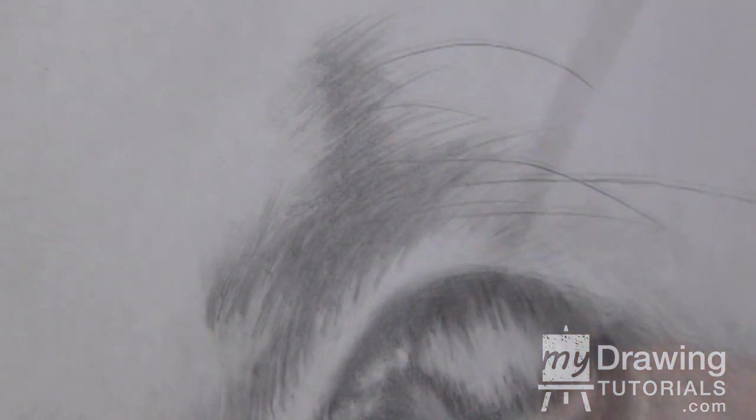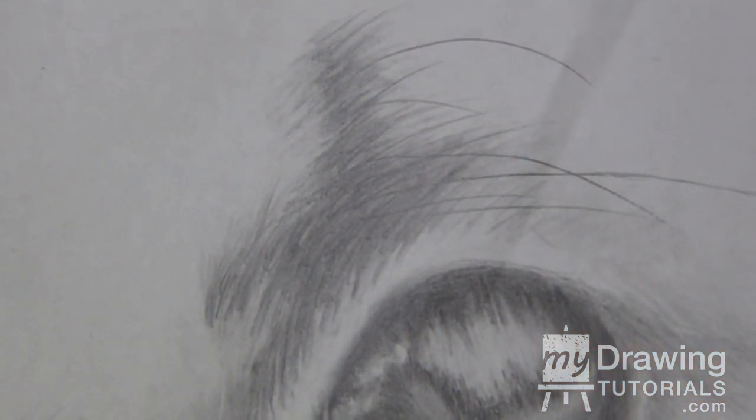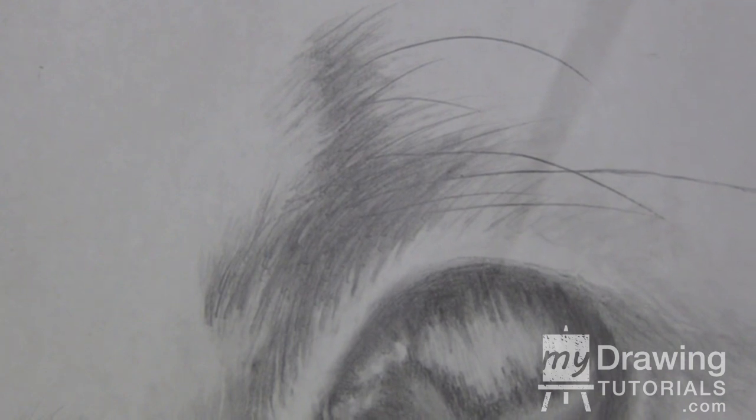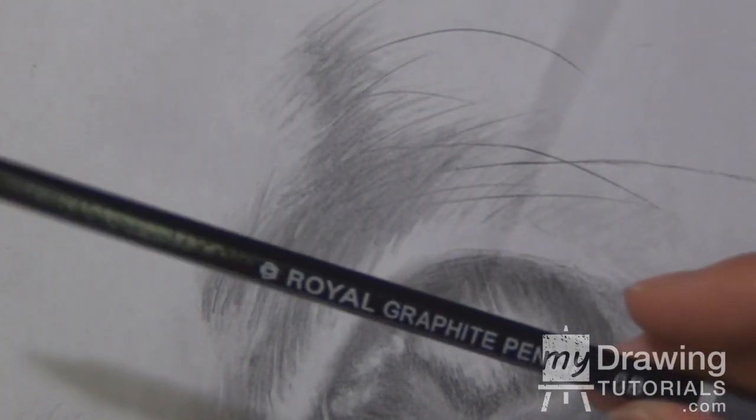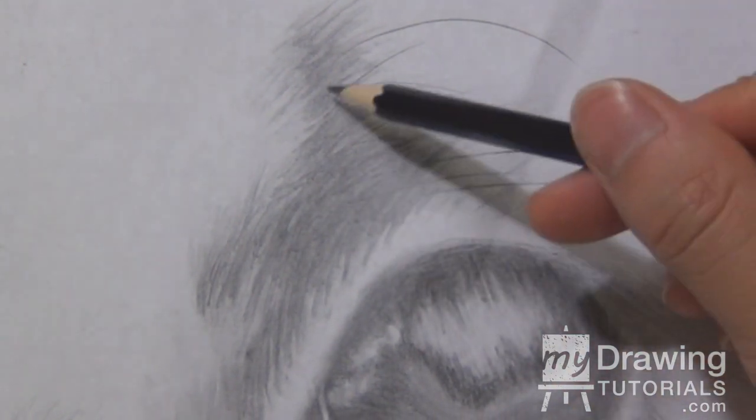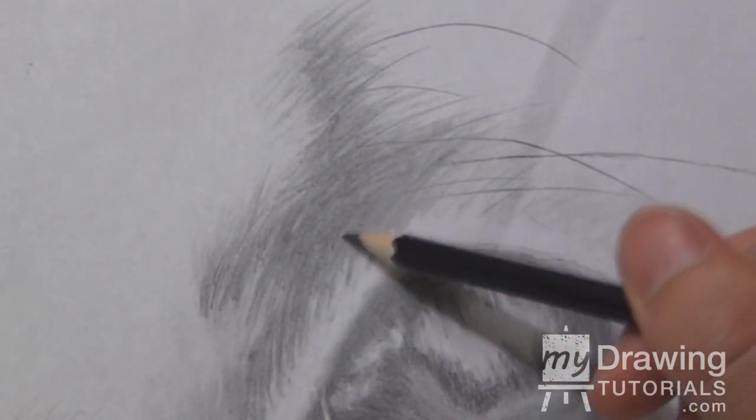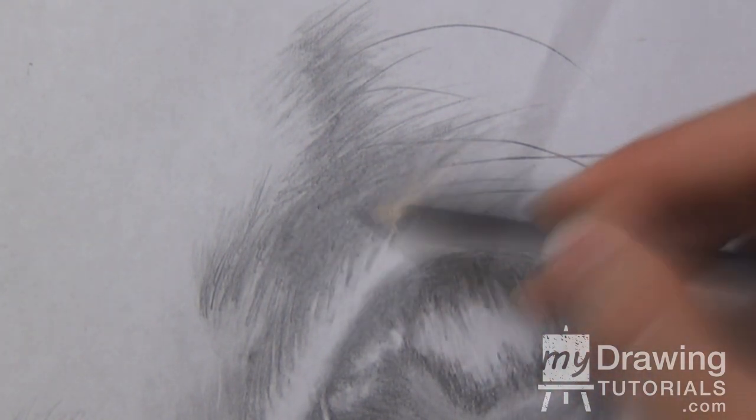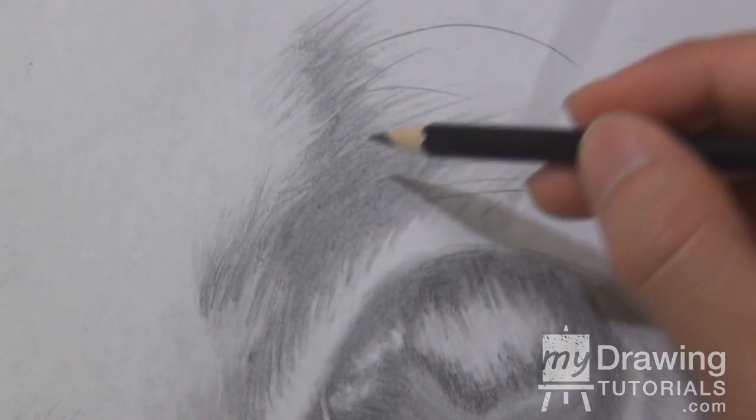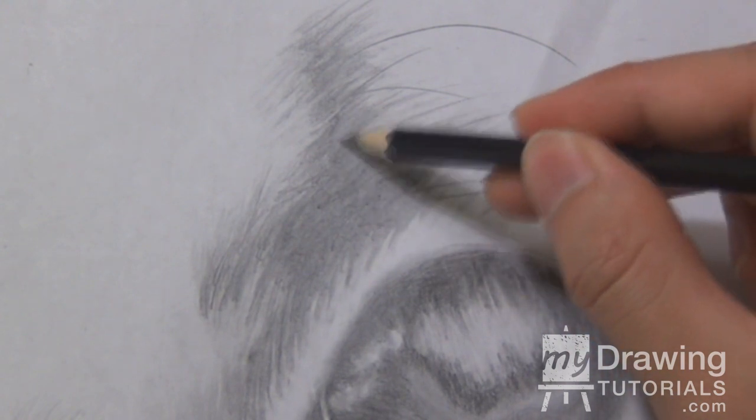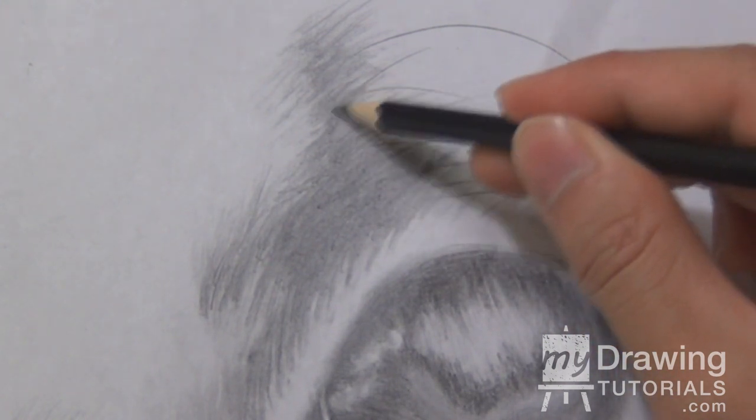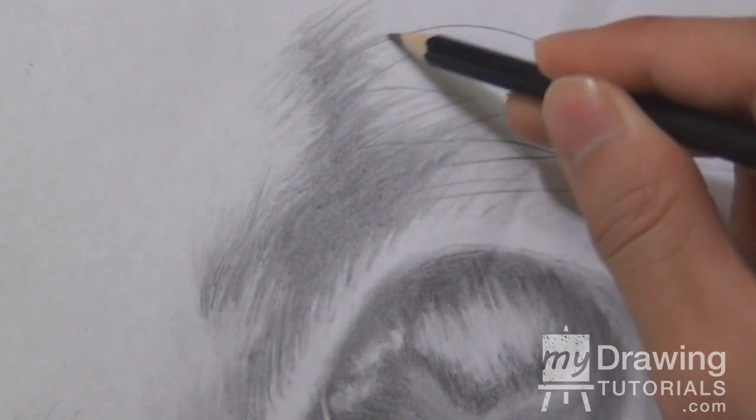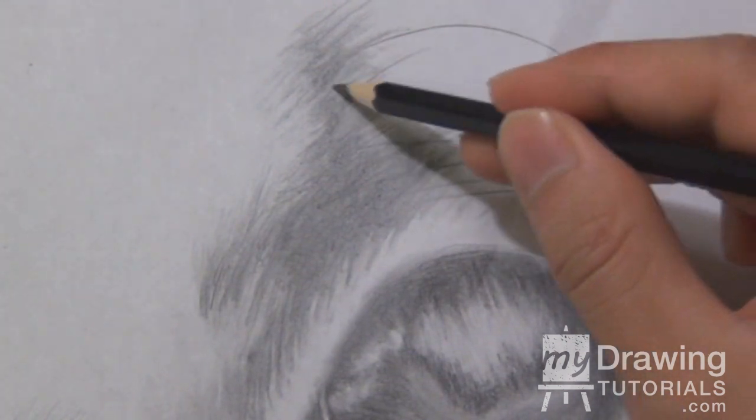So that looks pretty good. Now I want to take my 6B pencil and really darken in the very core of this patch of fur here. Partly because the tone in the reference is very dark but also partly because I want to camouflage some of the root of these hair so that it looks more natural.